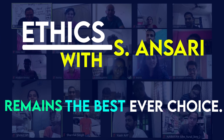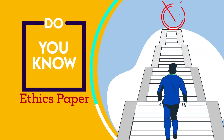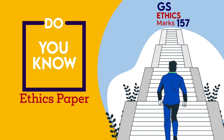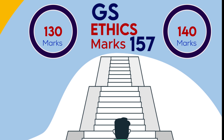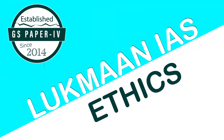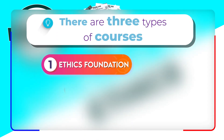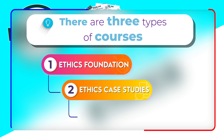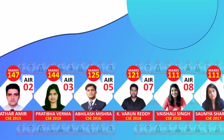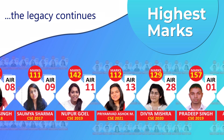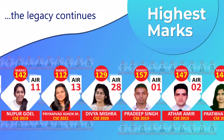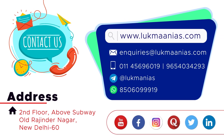Ethics with S. Ansari remains the best ever choice. Do you know that ethics paper is the only paper in general studies that pays more with less efforts? One can easily secure 130 to 140 marks. Lukman IAS is a well-established name since 2014 for ethics paper. We offer three types of courses: ethics foundation course, ethics case studies, and ethics test series. Since 2015, Lukman IAS students have maintained the records of securing the highest marks in this paper. Contact us today for more information.